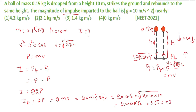So the impulse is 4.2 kg·m/s. The answer for this question is the first option. Now let us go to our next question.